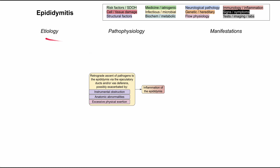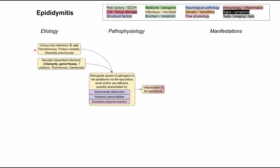The most common infectious agents are bacterial. This can come from a urinary tract infection or a sexually transmitted infection. Older men and children tend to get urinary tract infections, whereas sexually active young men, usually below 35 years of age, tend to get sexually transmitted infections. The most common UTI bug is E. coli, but other bugs include Pseudomonas, Proteus mirabilis, and Klebsiella pneumoniae.